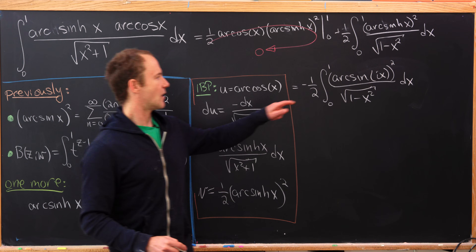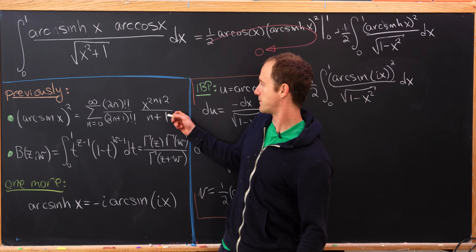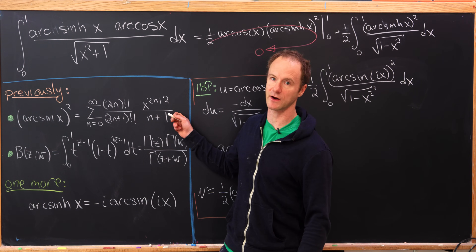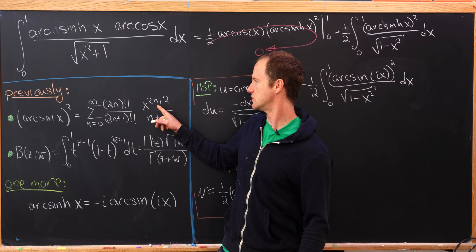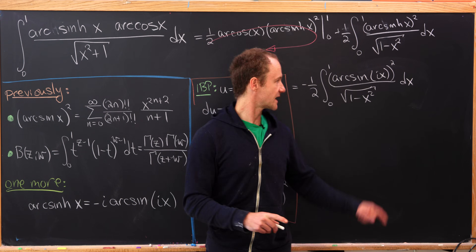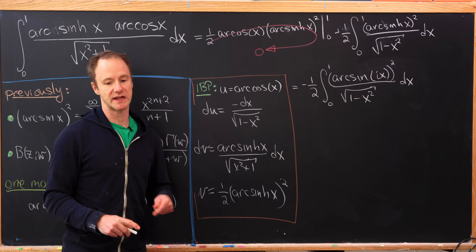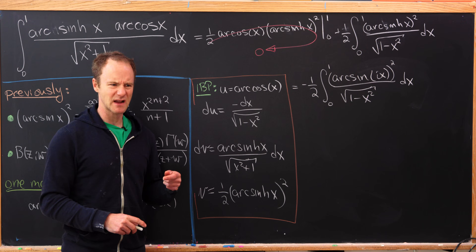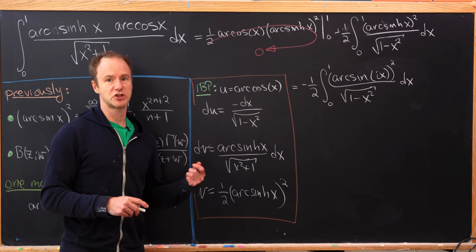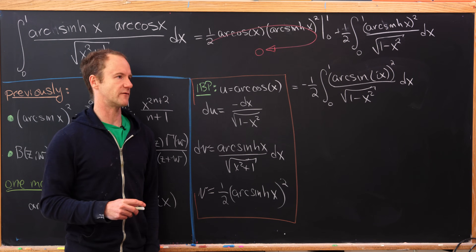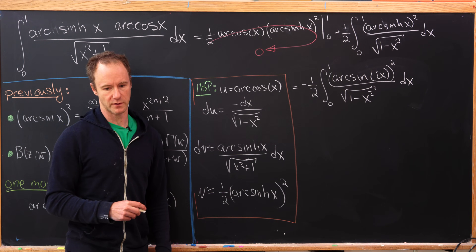Now we take arcsin(ix) and replace it with its power series. Notice we only have even powers of x, which is great because those even powers will take the value of i and turn it into plus or minus 1, depending on whether those powers are 2 mod 4 or 0 mod 4 — that is, whether they have remainder 2 or 0 when dividing by 4.